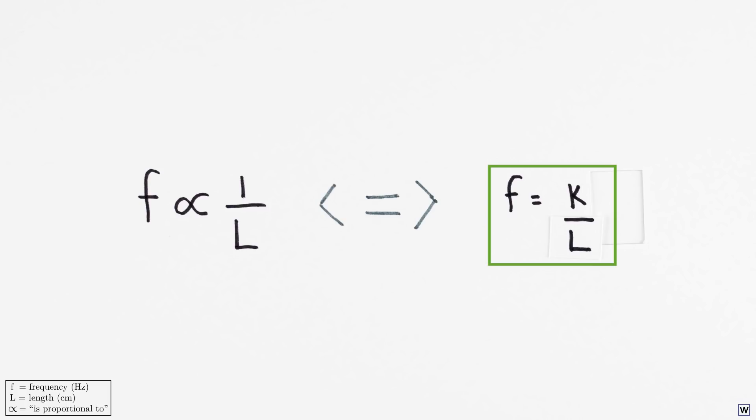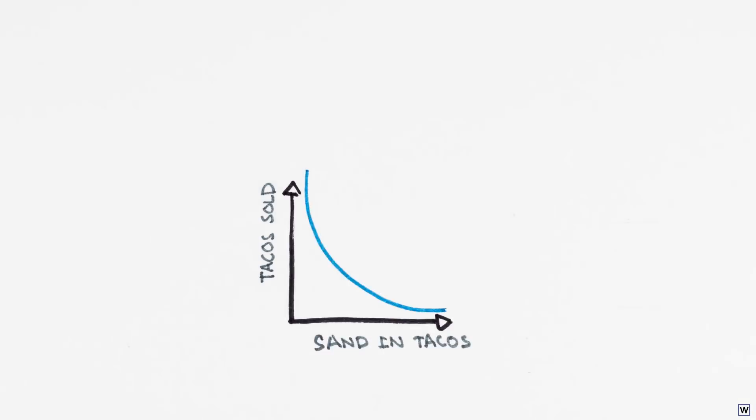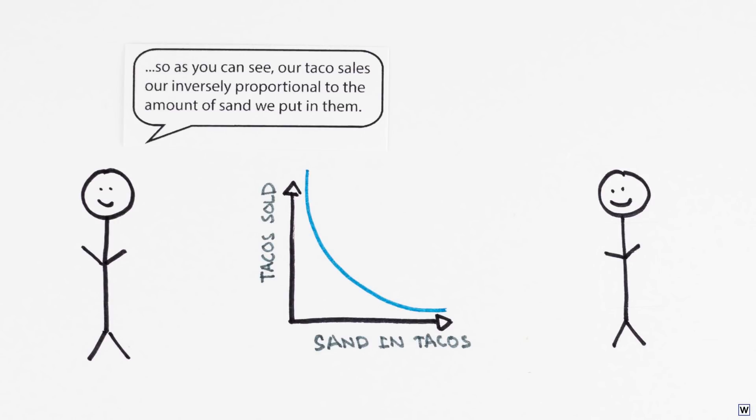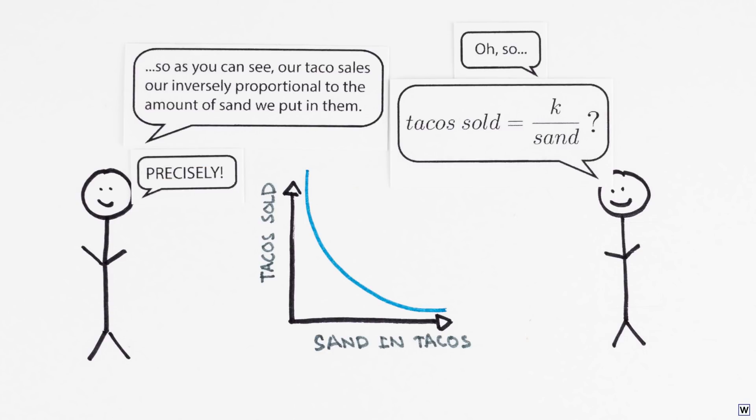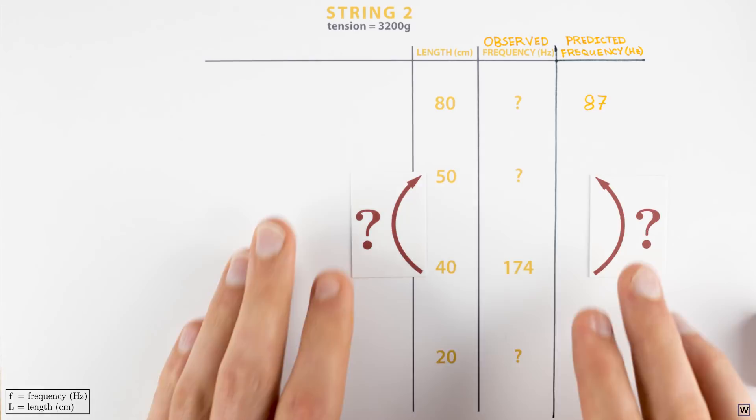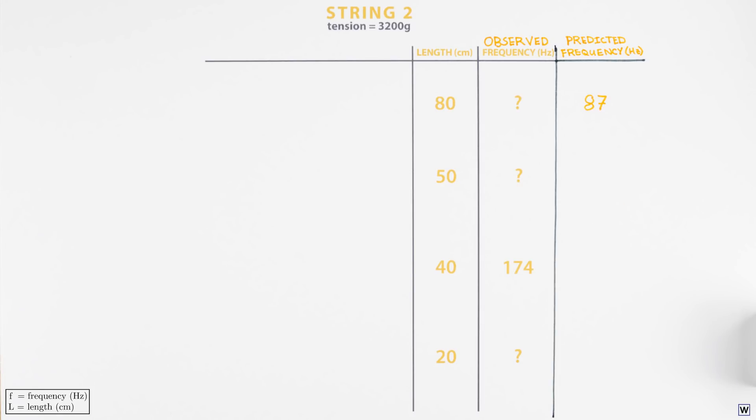Mathematically, this formula completely captures the concept of inverse proportionality. So if someone tells you that two variables are inversely proportional, assuming they know what they're talking about, they don't just mean that when one gets bigger, the other gets smaller. They mean exactly this. That one variable equals some constant of proportionality divided by the other. Now that we have a slightly more useful version of our mathematical relationship, let's use it.